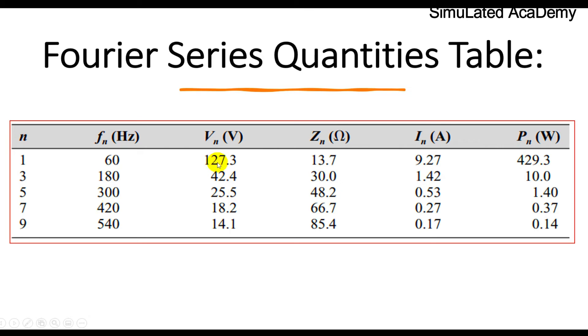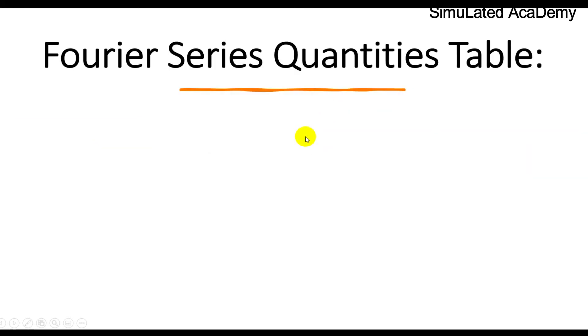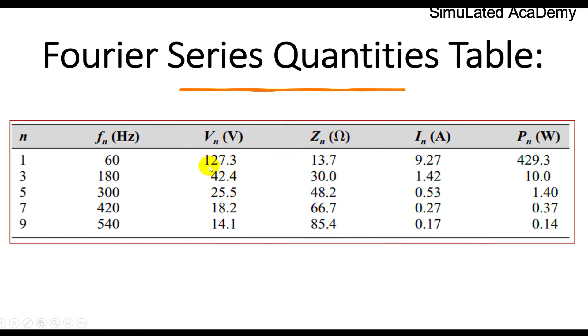The voltage comes out to be, just put here n equal to 1, 3, 5 and so on. The first harmonic voltage is 127.3 and the ninth term is equal to 14.1 voltage.